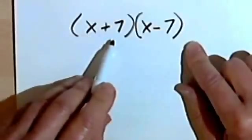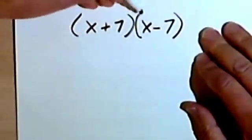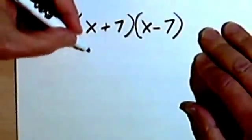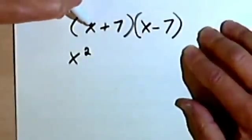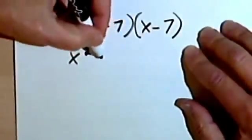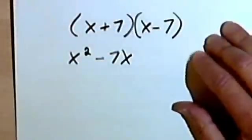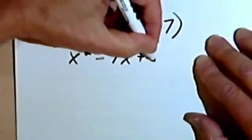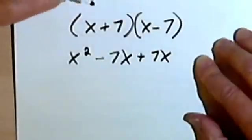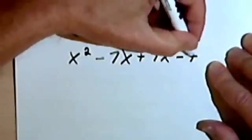So let's multiply x plus 7 times x minus 7. So we FOIL these. We get x times x will give me an x squared. We're going to get x times negative 7 is negative 7x. Then positive 7 times x is positive 7x. And 7 times negative 7 is negative 49.